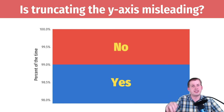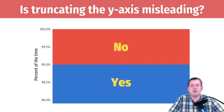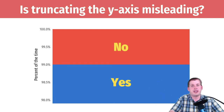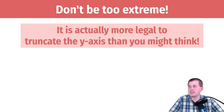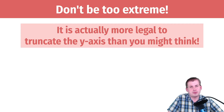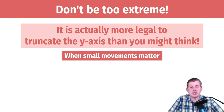Often you'll see memes online asking 'is truncating the y-axis misleading?' where the y-axis is at like 98 to 100%, making it look misleading. While that's funny, it's not actually true as a universal rule. You can truncate the y-axis — just don't do it on a bar chart. It's surprisingly okay in lots of situations. We're going to talk about a few situations where it is okay.